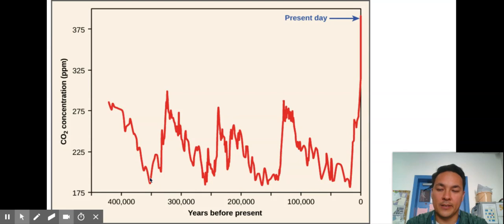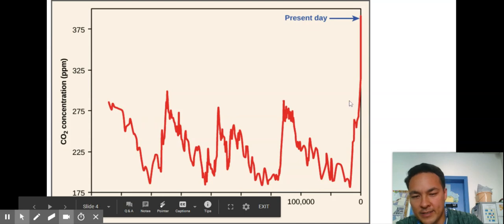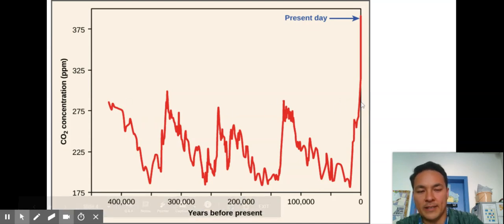There's something called the Milankovitch cycles that you can look up. That's the distances between the Earth and the sun and the wobble of Earth and how the degree on its axis differed over time. That leads to these different CO2 concentrations which led to ice ages and warm times on Earth. But what's important—if you look at this and you see it tops out around 300, what is happening at present day?